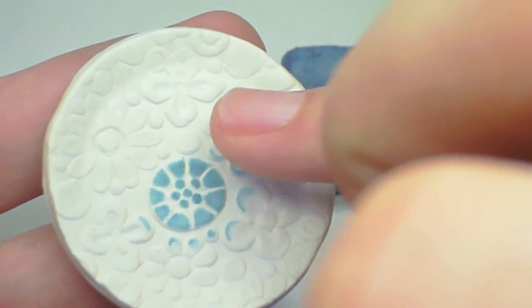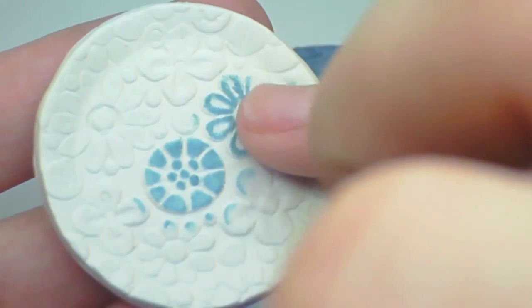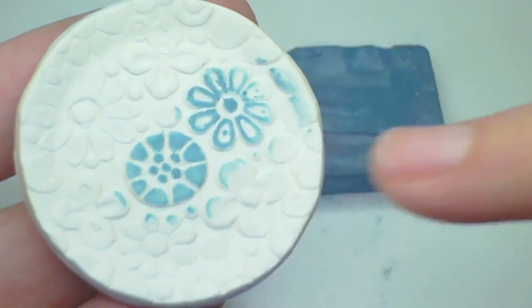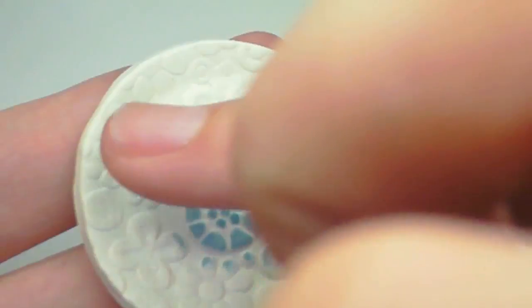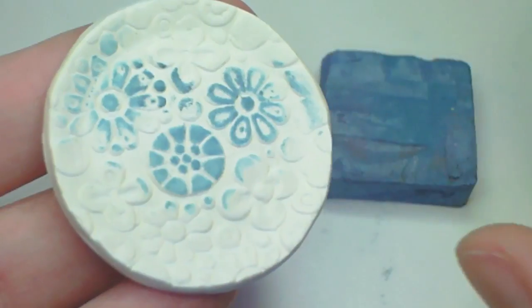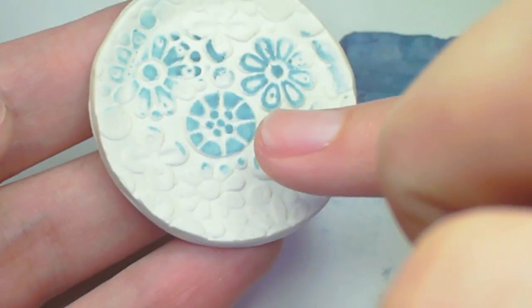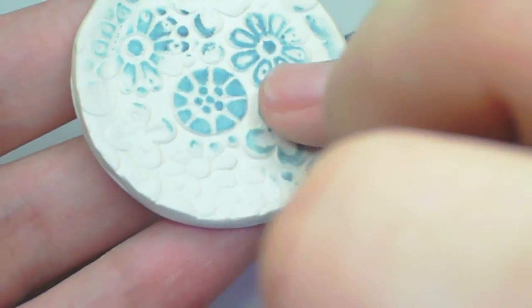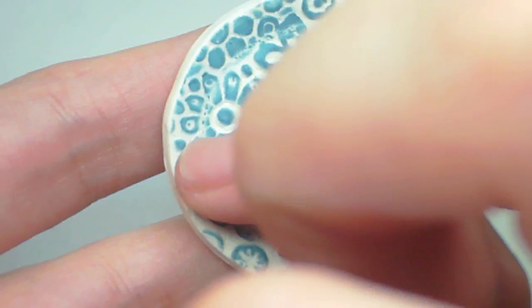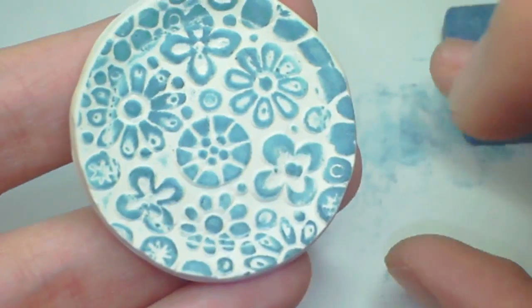I wouldn't recommend using a paintbrush because that would get the color everywhere. You just want it on the very surface. You don't want it in the grooves of the pattern that you created. So do that to the entire dish, and it should look like that.